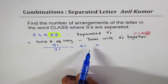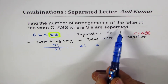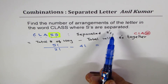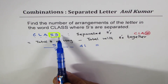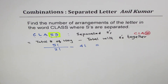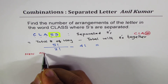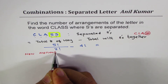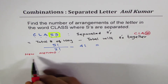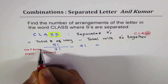However, this strategy fails if we have a word with three or four S's. When we say they are separated, we mean no two can be together, no three can be together, and no four can be together. There are so many cases, which makes the question very complicated. So here the approach is a well-known alternative method.